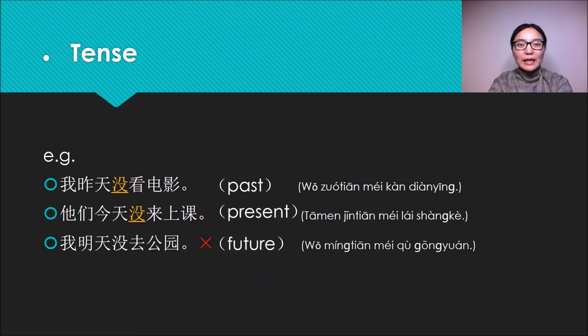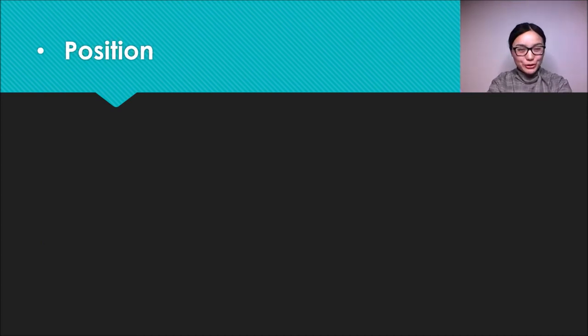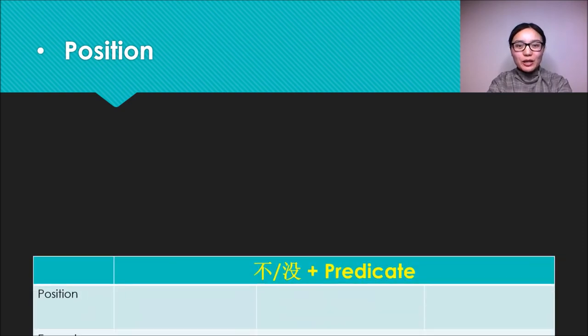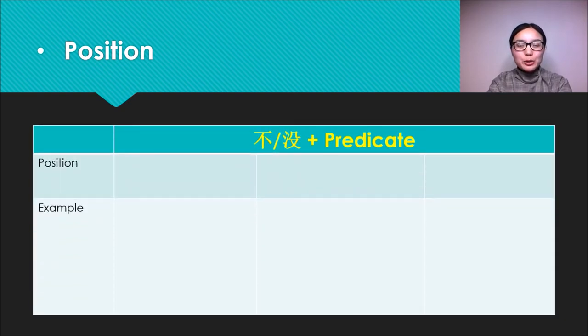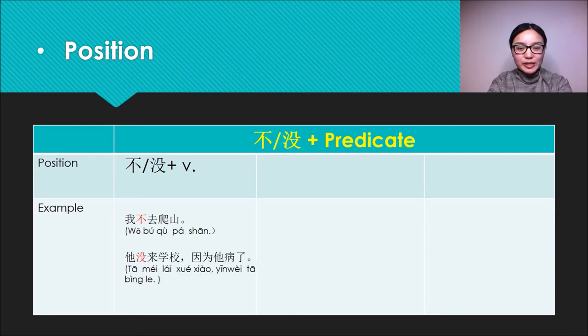Finally, come to the position part. In this part, firstly we will talk about Bu and Mei can be put before the predicate, or specifically speaking, Bu and Mei can be put before the verb. For example: 我不去爬山 (I don't go to climb) or 他没来学校因为他病了 (he hasn't come to school because he was ill).